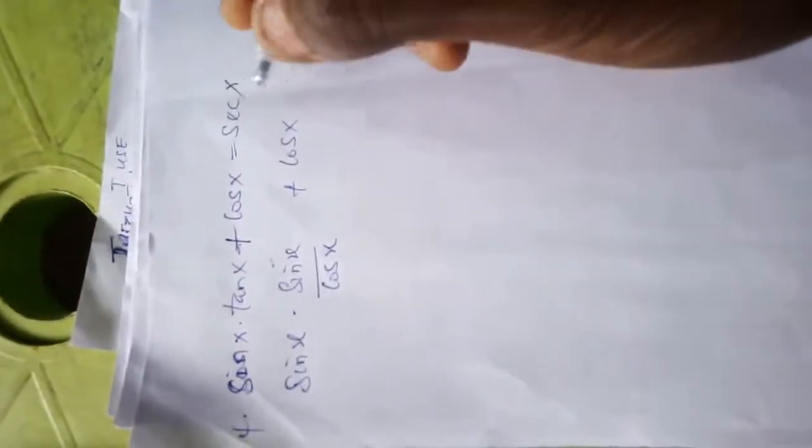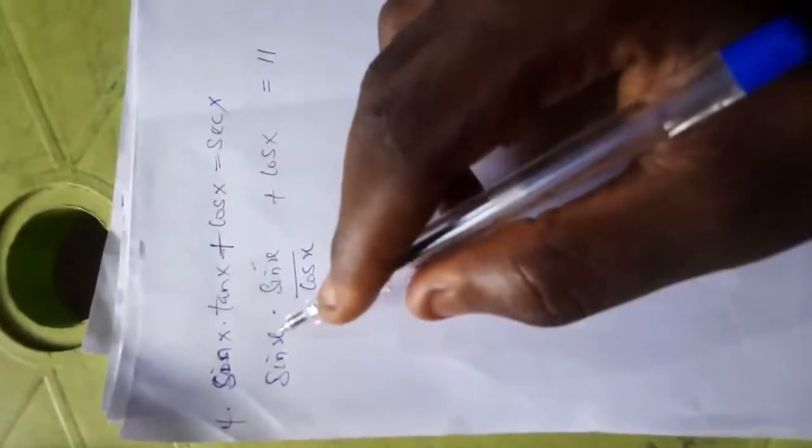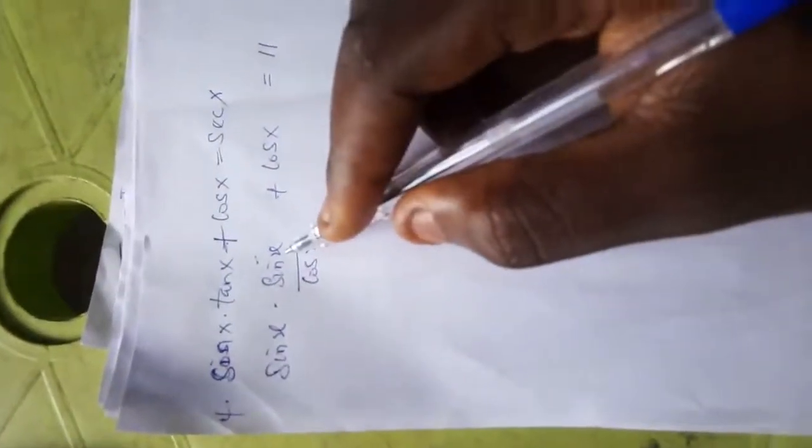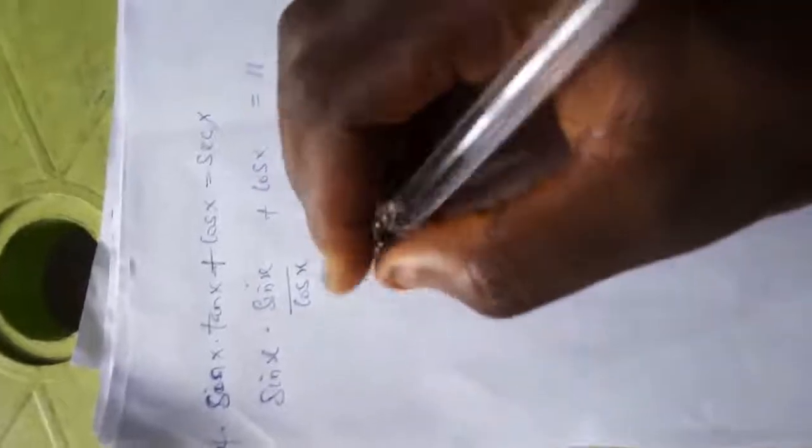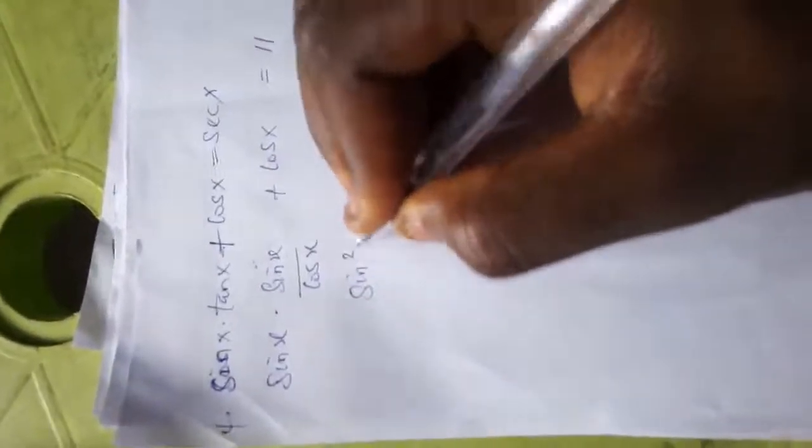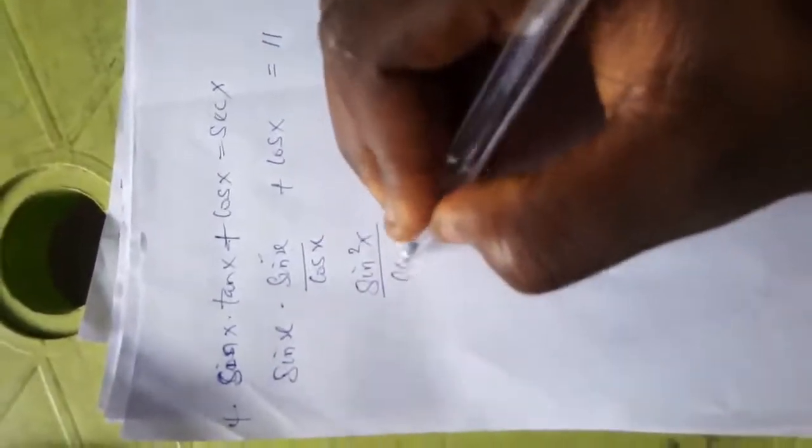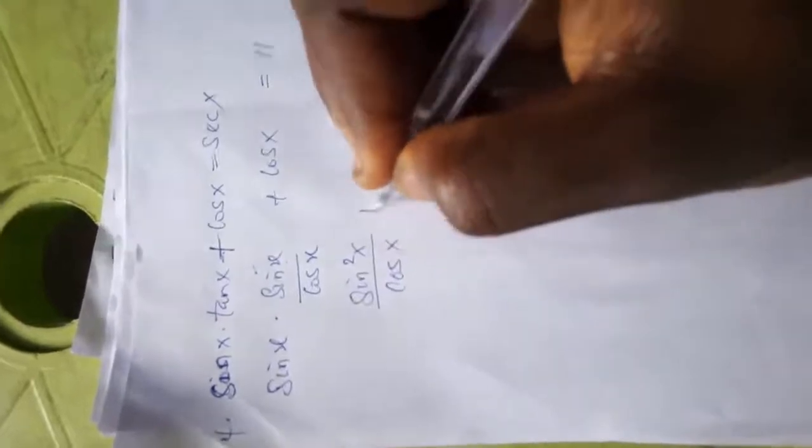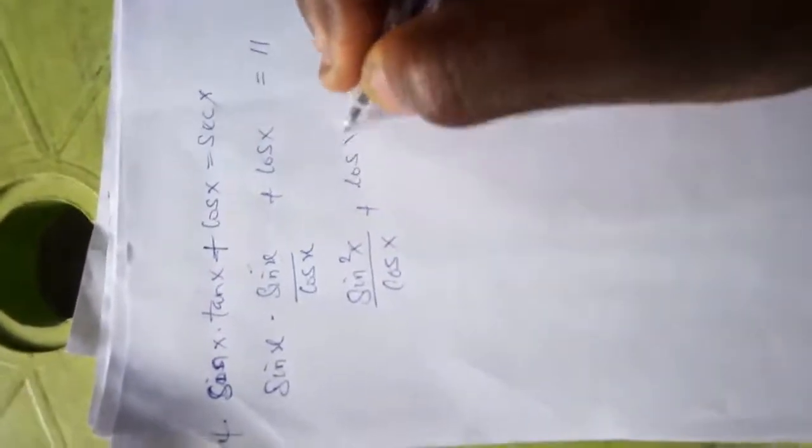I want to prove that the whole of this is equal to sec. So that's my goal. Now this is sine x times sine x, which is sine squared x over cos x, plus cos x over 1.